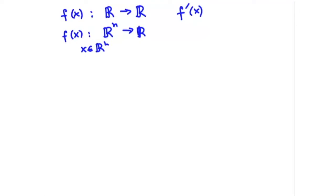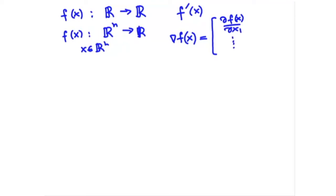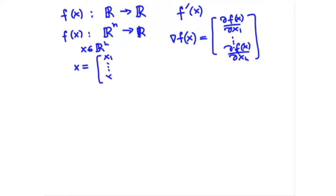The analog of the first-order derivative will be the gradient of f of x. The gradient of f of x is denoted by the nabla symbol, ∇f(x), and it is given by the vector of the first-order derivatives of f: ∂f/∂x₁ through ∂f/∂xₙ. These are partial derivatives with respect to each variable, and the vector of variables in Rⁿ is given by x₁ through xₙ.